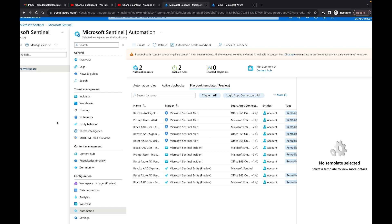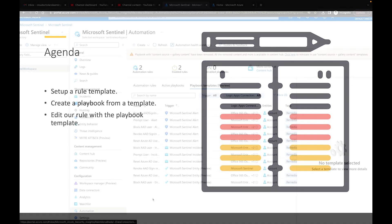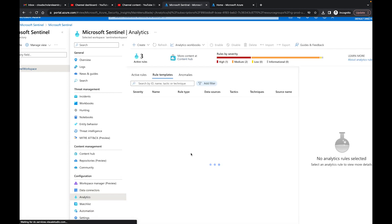Today what I want to do is talk to you about playbooks and how we're going to set them up. Here's our agenda for today: I'm going to set up a rule template associated with MFA, I'm going to create a playbook from a template, and I'm going to show you exactly how to edit our rule with the playbook template. First thing we need to do is go to Analytics and create an analytic rule.